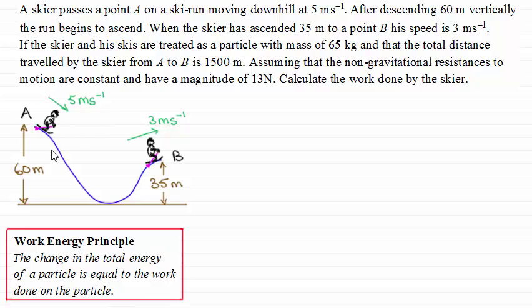So we've got a sketch here where we've got this skier passes through this point A on a ski run moving downhill at 5 meters per second. And after descending 60 meters vertically the run begins to ascend. And when the skier has ascended 35 meters to a point B his speed is 3 meters per second. And if the skier and his skis are treated as a particle with a mass of 65 kilograms,